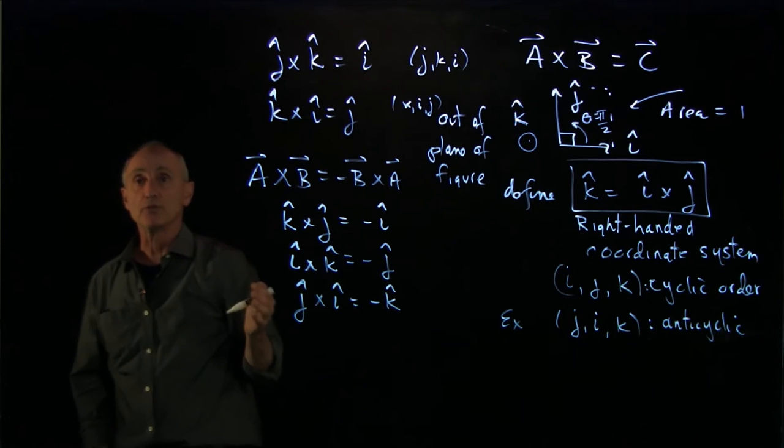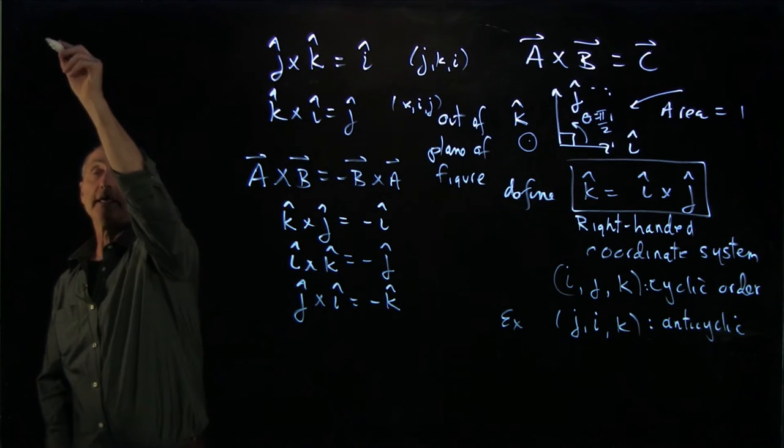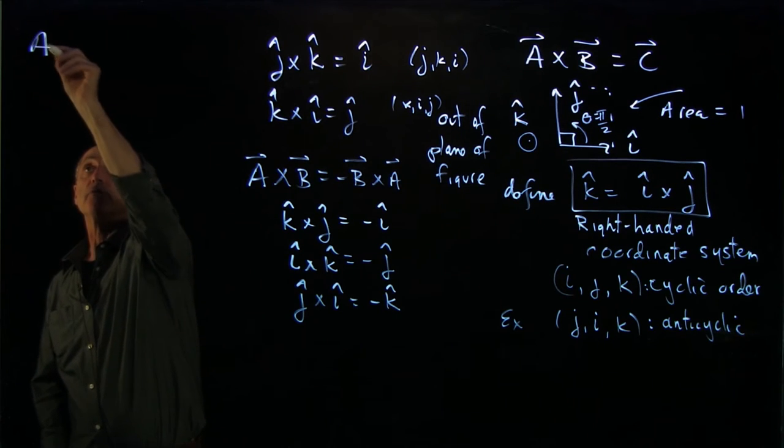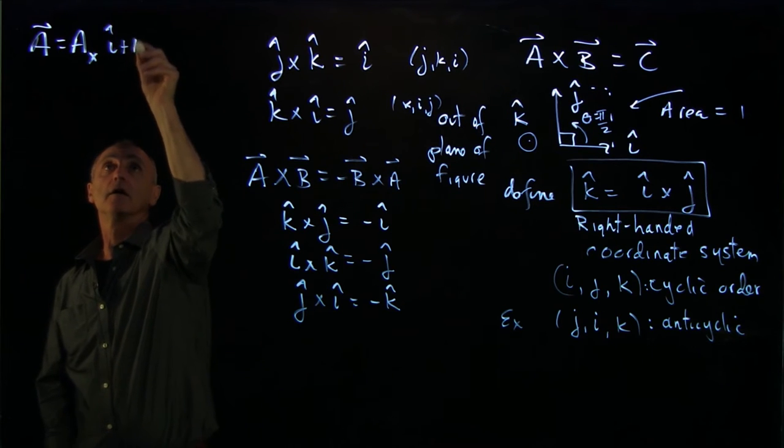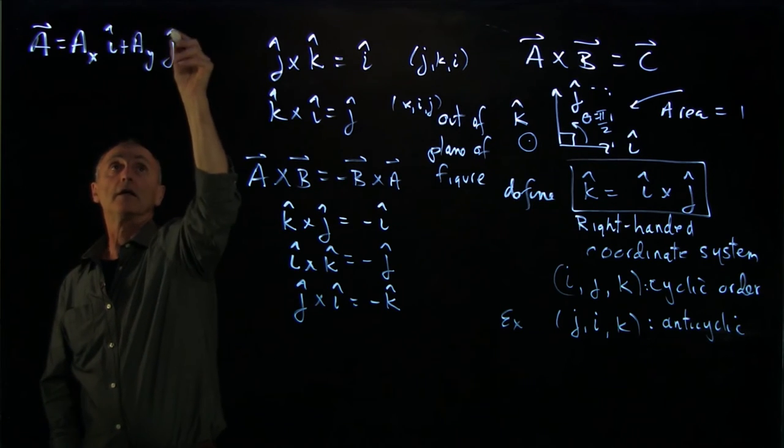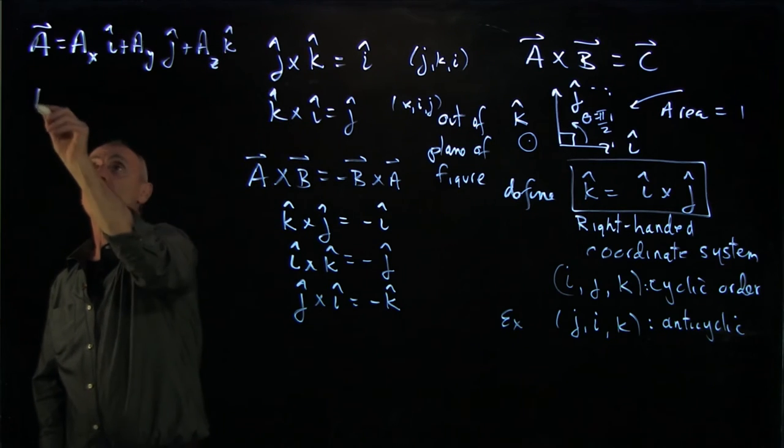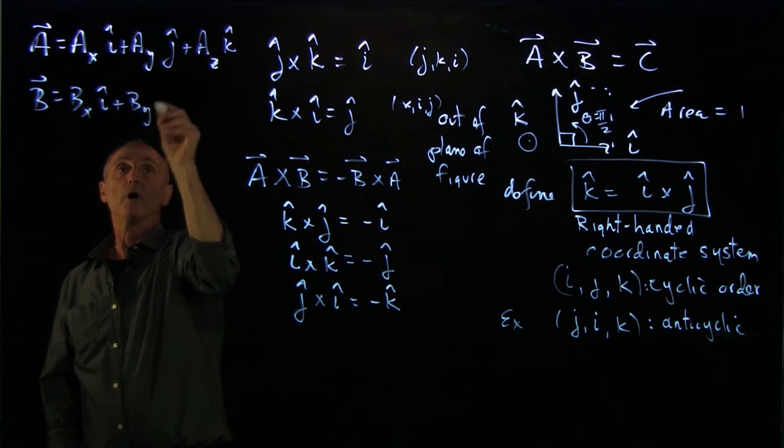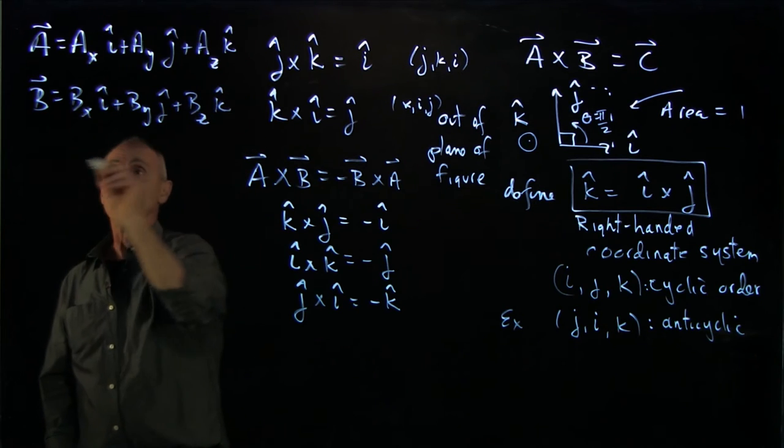Now, when you want to compute the cross products in Cartesian coordinates, for instance, it can be a little bit messy. There's going to be a lot of terms. If I write a vector a as ax i hat plus ay j hat plus az k hat, and I write a vector b as bx i hat plus by j hat plus bz k hat,